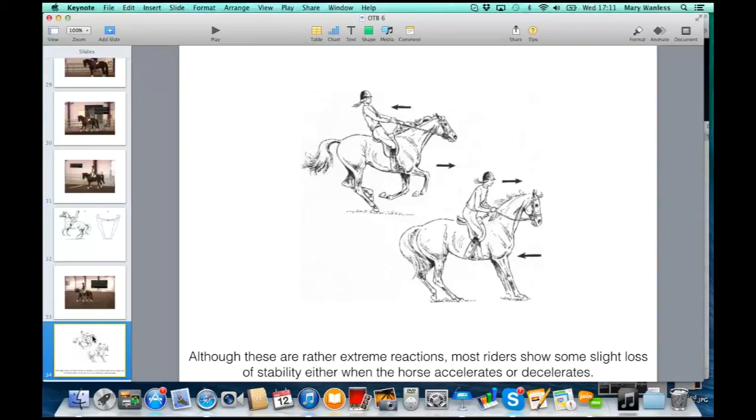The same thing happens with your horse. The bottom drawing shows the horse has decelerated fast and the rider's toppled forward.